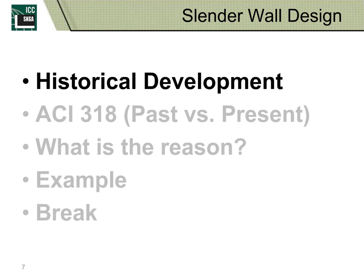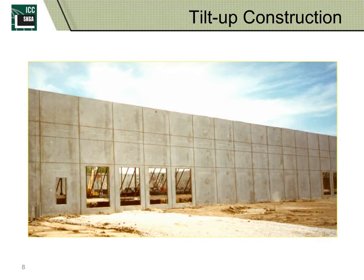Starting with the historical development, the first tilt-up wall panel was ever erected around 1909, but it didn't become more common until the 1960s and 70s. It really became a blockbuster in the 1970s and 1980s and continues through the current day. These walls are typically site-cast rather than precast, meaning they aren't brought in from a plant on a truck.